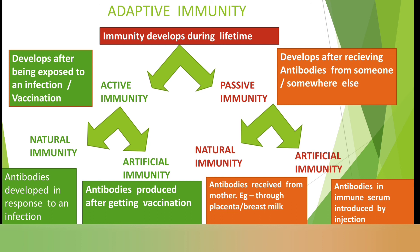As its name suggests, in artificial passive immunity we are artificially injecting the antibodies from somewhere else. To summarize: in active immunity, our own body produces the antibodies against a certain type of infection or vaccination. In passive immunity, we are not producing the antibodies — we are receiving antibodies from someone or somewhere else.